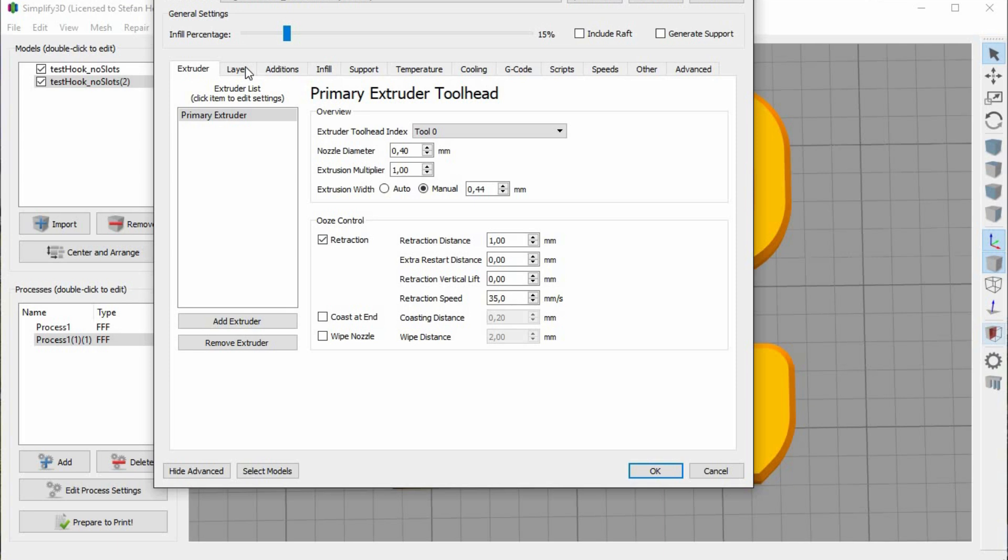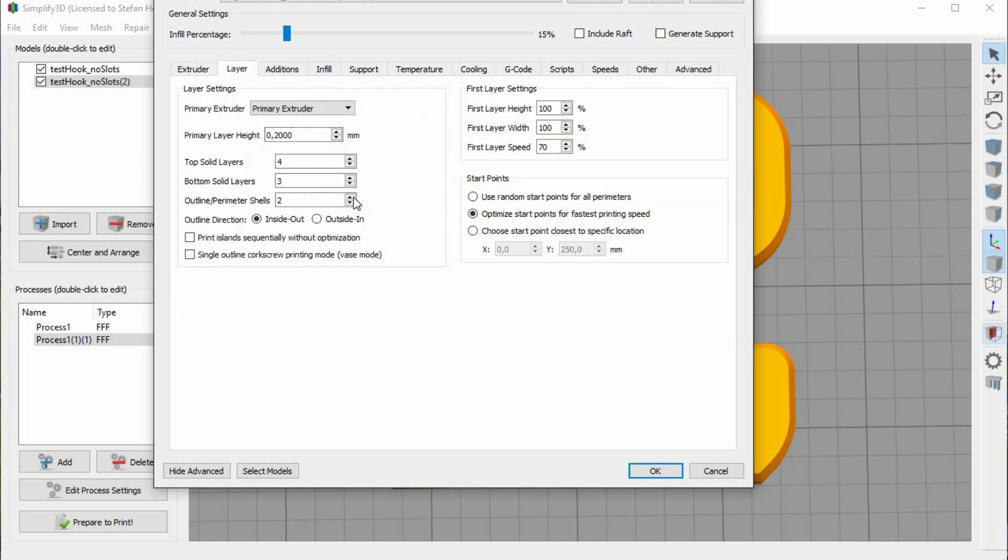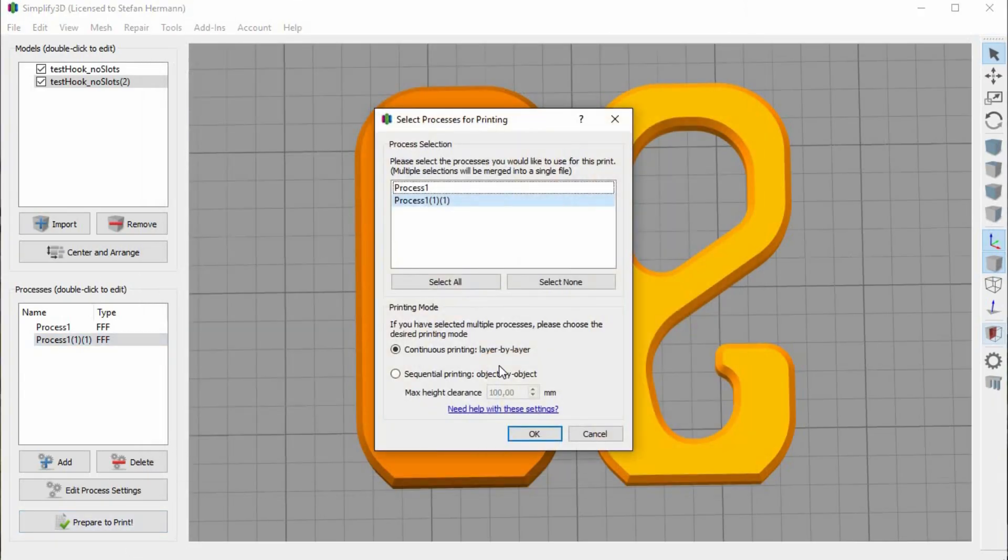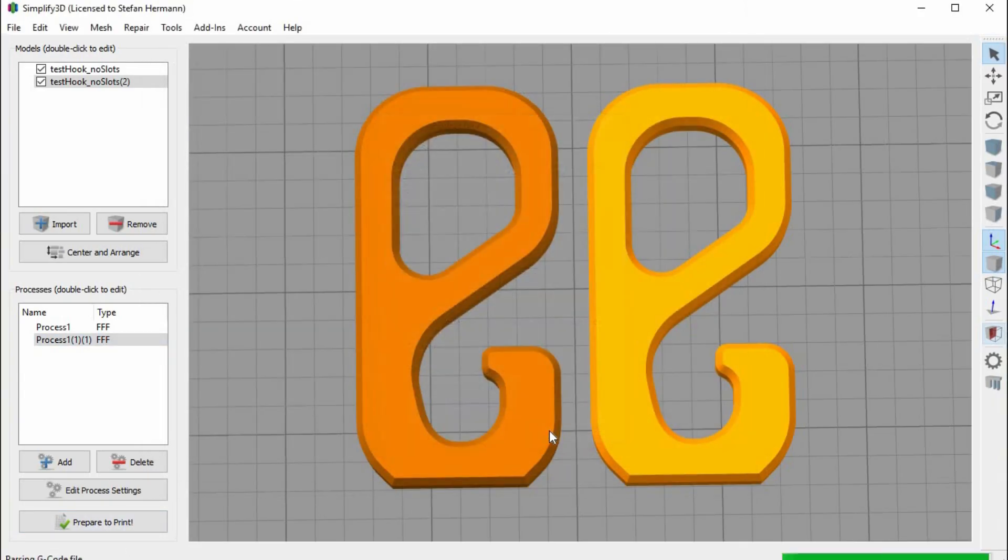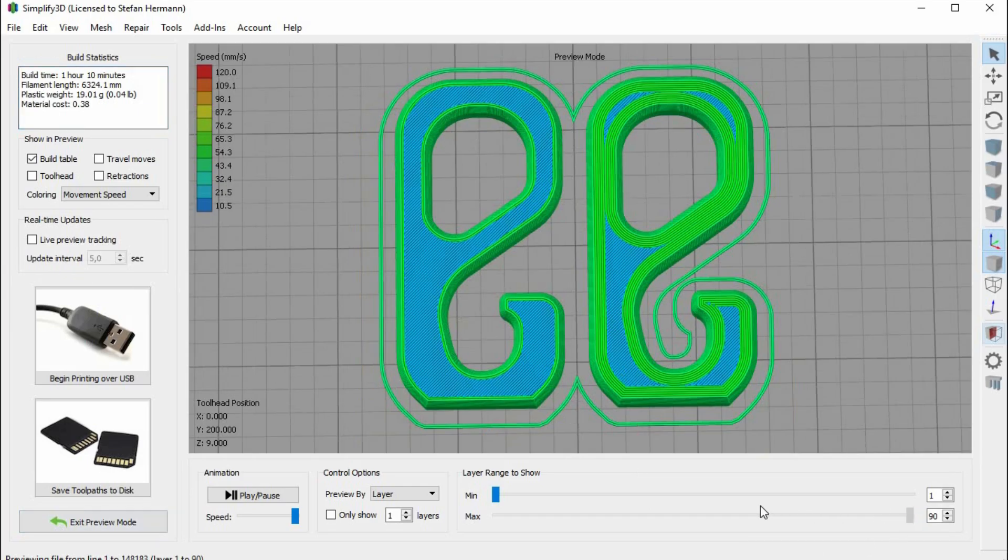The other option is increasing the thickness of the outer shell by adjusting the shell thickness, wall thickness, number of perimeters or however it is called in your slicer. Usually for a strong print you'll be adjusting both values.